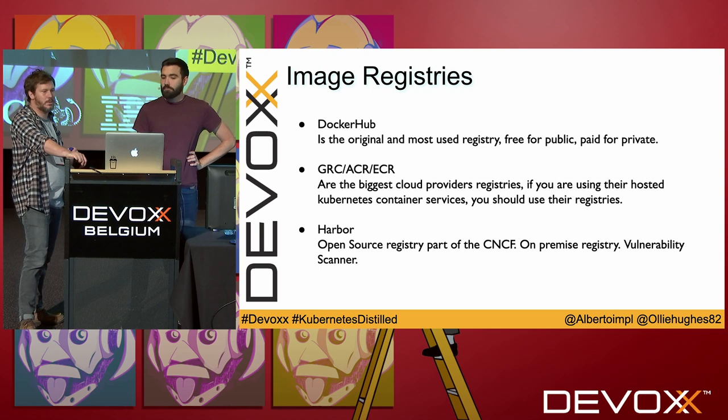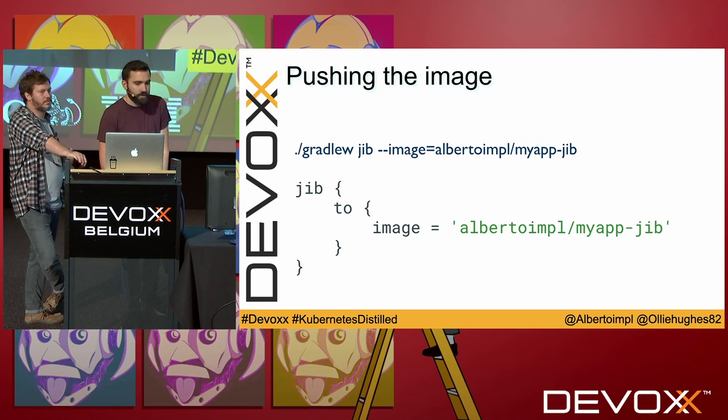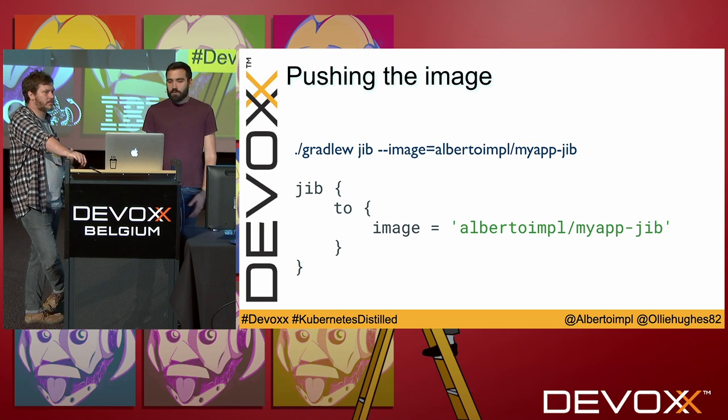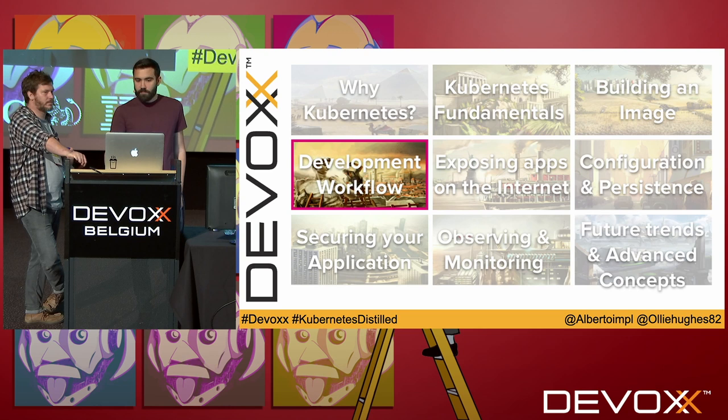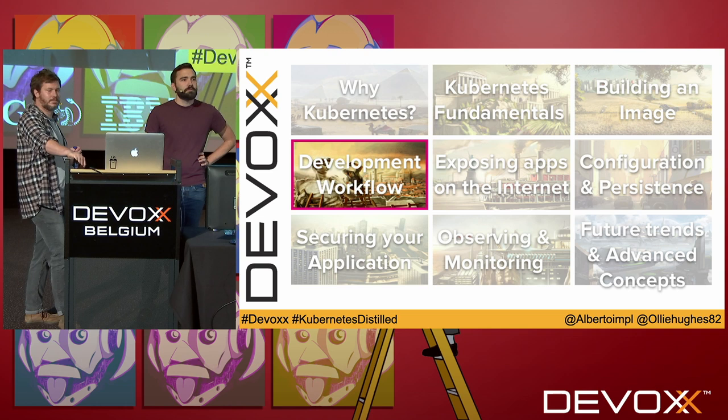Let's see how to get JIB to push images to a registry. There are two ways: passing it as a parameter, or by using the build.gradle file — or Maven if you prefer. I usually use the second option nowadays. Any questions so far?